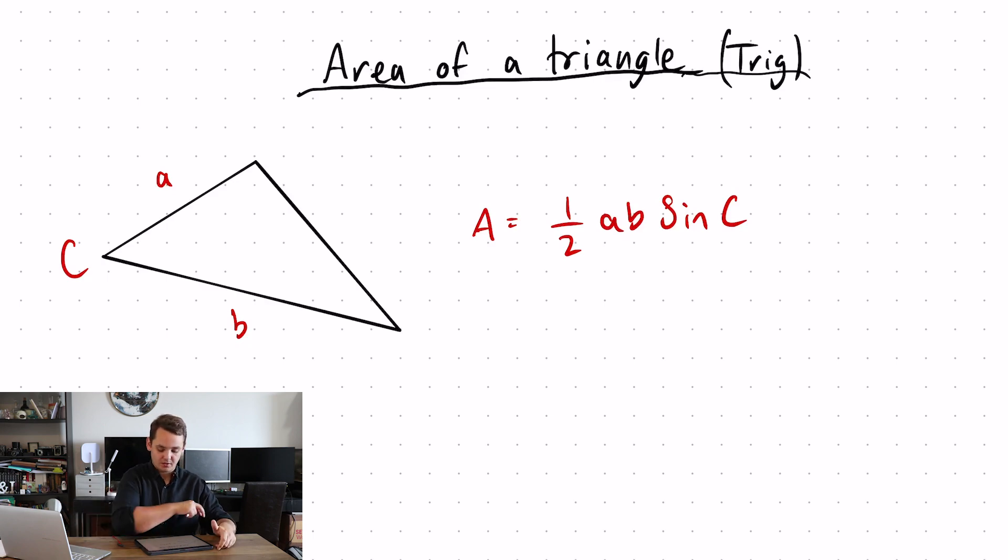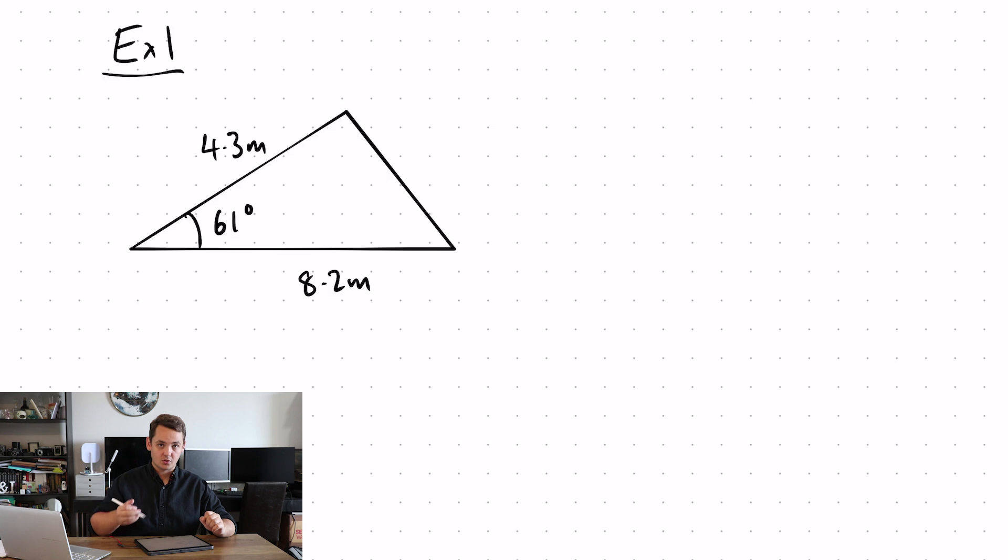Let's have a look at how we can do this. So with this question here, I'm going to label my two sides A, B, and C. So I've got two sides and an angle between.